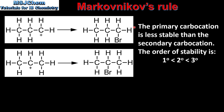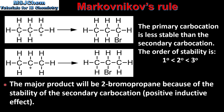The primary carbocation is less stable than the secondary carbocation. The order of stability of carbocations is: primary carbocations are the least stable, and tertiary carbocations are the most stable. Therefore the major product in the reaction of propene and hydrogen bromide will be 2-bromopropane. This is because of the stability of the secondary carbocation. The carbon atoms bonded to the carbon with a positive charge produce what's called a positive inductive effect. The more carbon atoms bonded to this carbon with a positive charge, the greater the positive inductive effect, and the greater the stability of the carbocation.